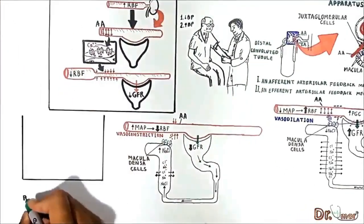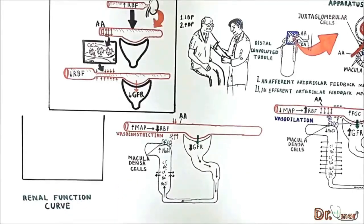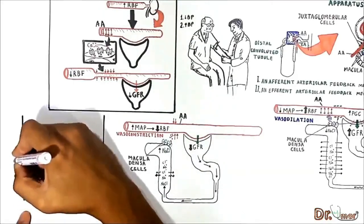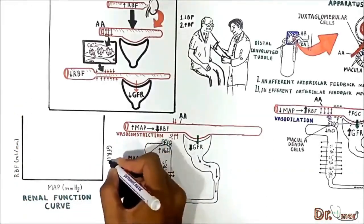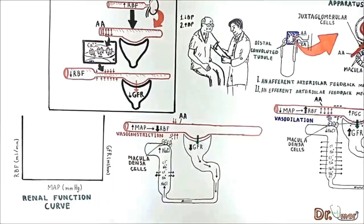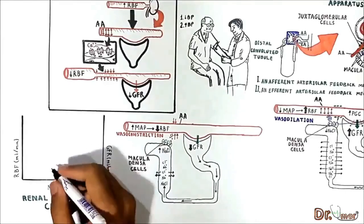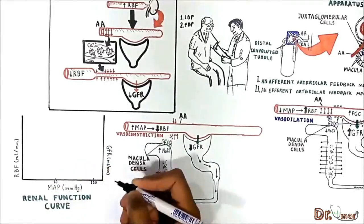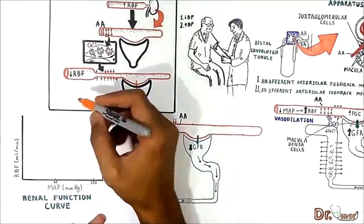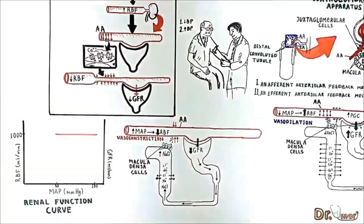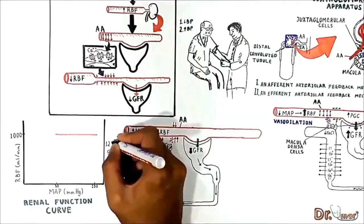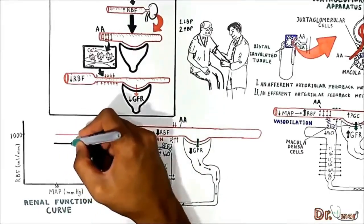After all of this, the graph of the renal function curve should be clear. On one axis we have the renal blood flow, here we have the mean arterial pressure, and here the GFR. The kidneys autoregulate between 80 and 180 mmHg. At these values, the renal blood flow stays constant at about 1,000 mL per minute, and the GFR is about 120 mL per minute, also kept stable.